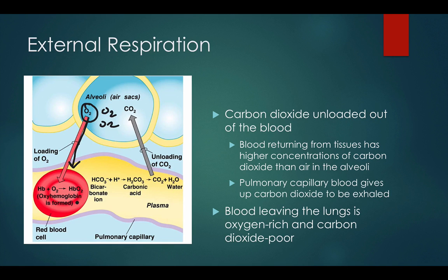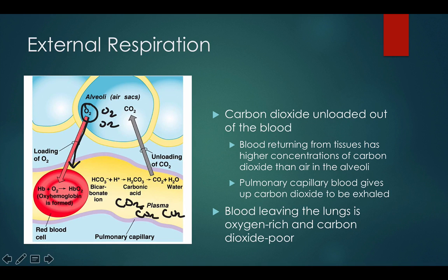Carbon dioxide is unloaded out of the blood. Blood returning from the tissues has a higher concentration of carbon dioxide. Diffusion will move that CO2 from areas of high to low concentration into the alveoli. The pulmonary capillary blood gives up carbon dioxide to be exhaled, and the blood leaving the lungs is oxygen-rich and carbon dioxide-poor.